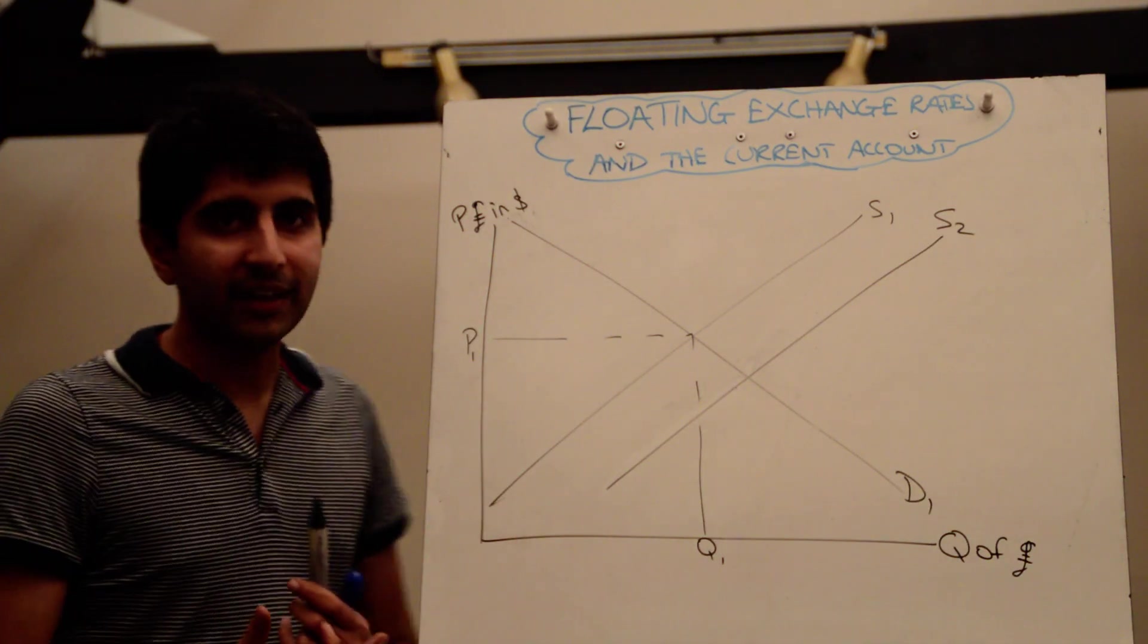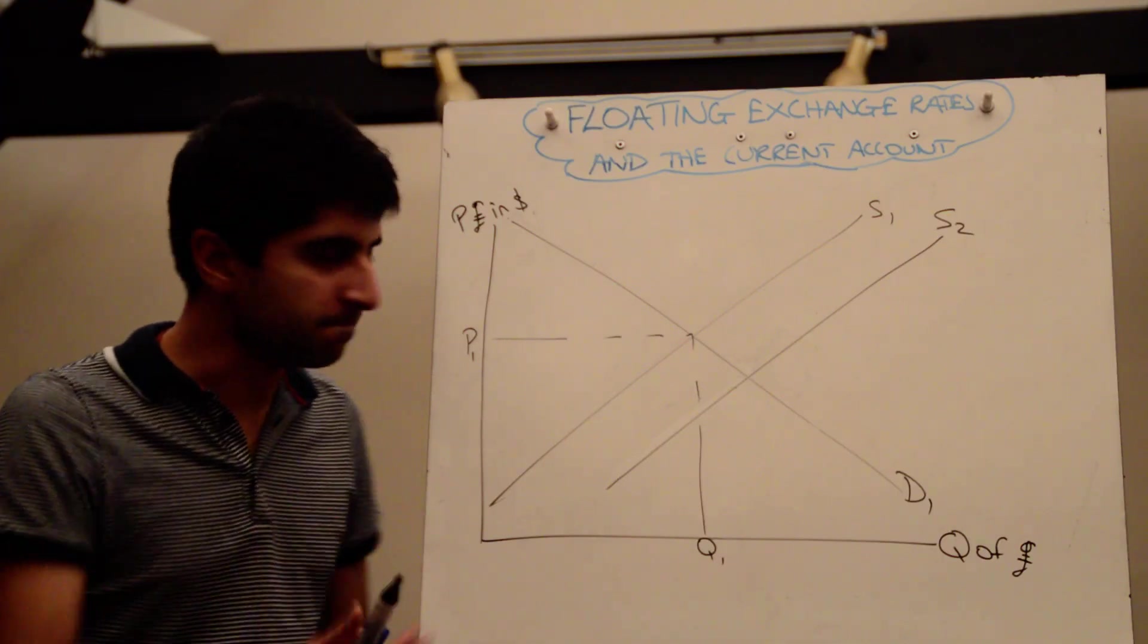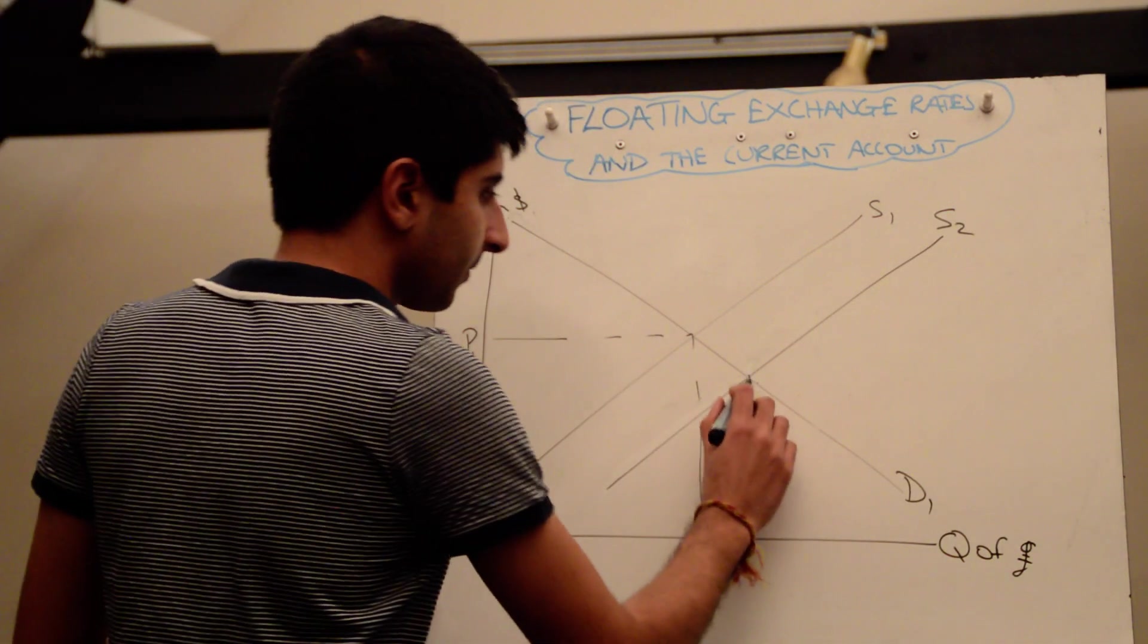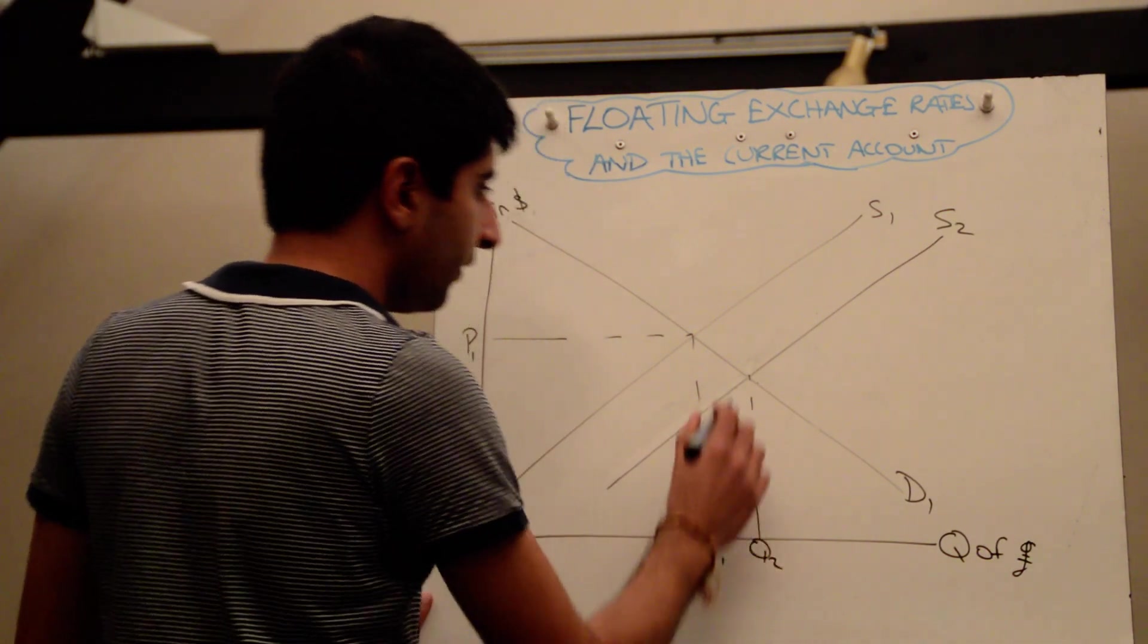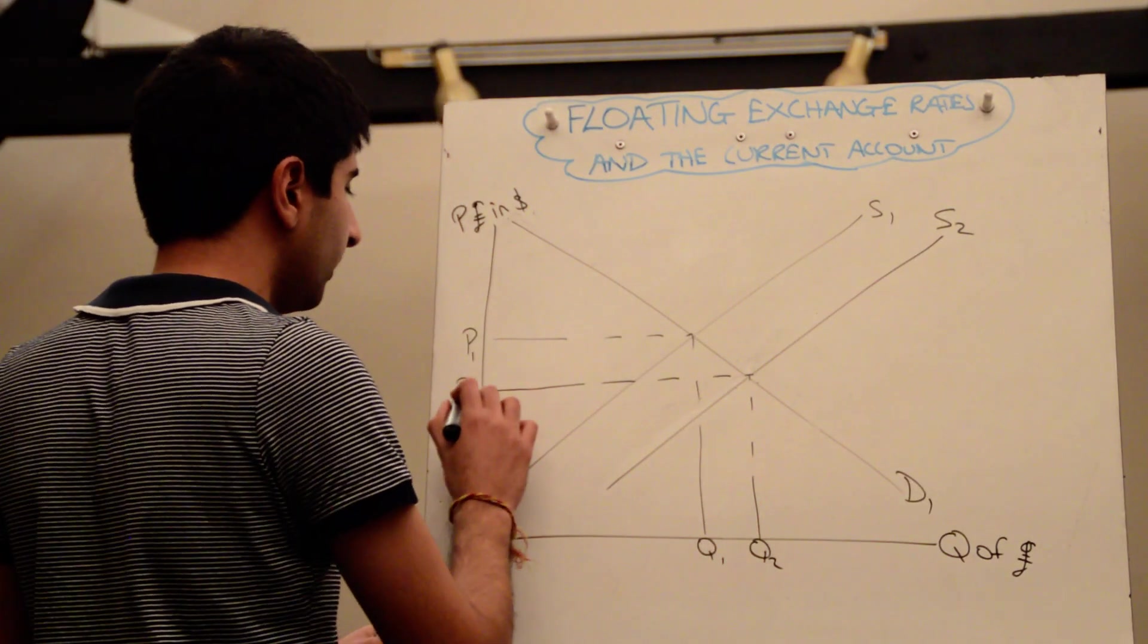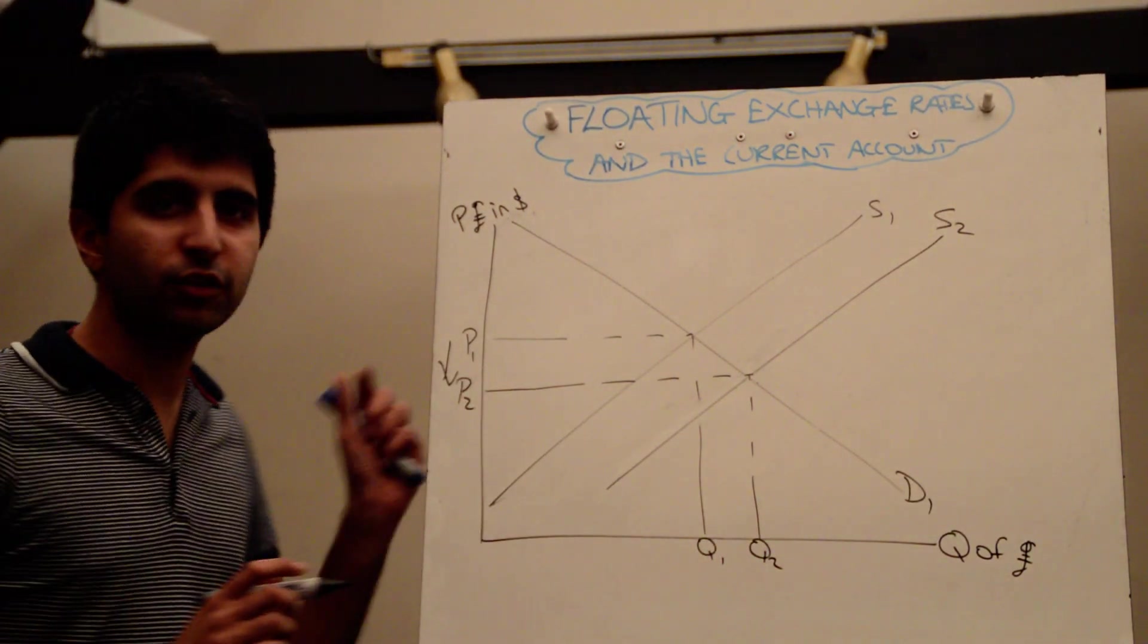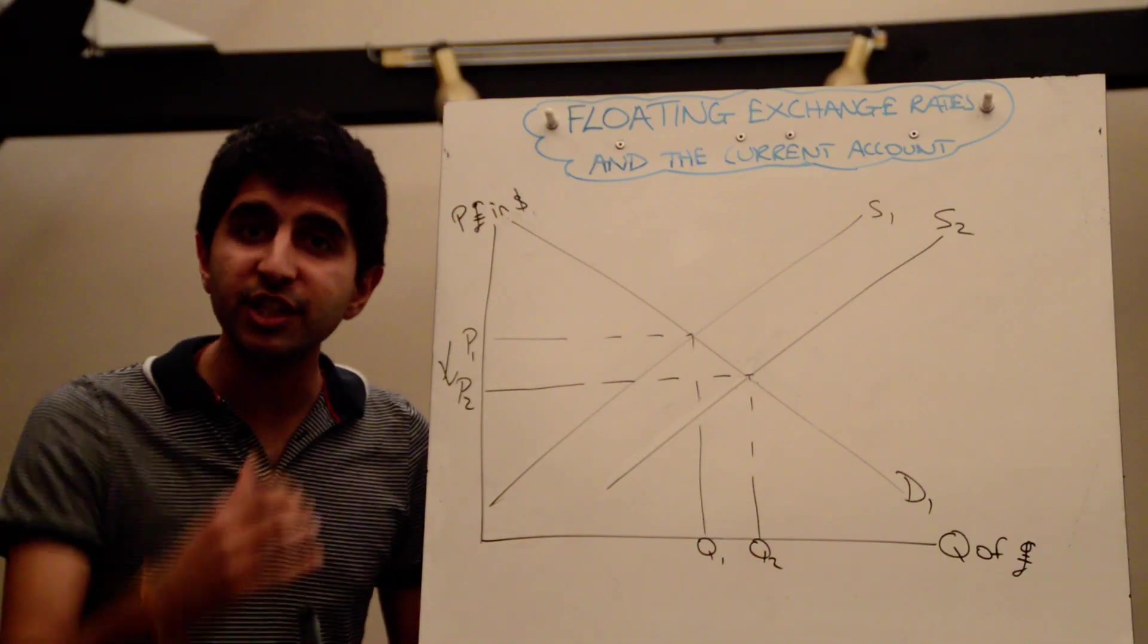So the overall effect is that the supply of the pound is increasing and that increases the quantity of the pound in the market but more importantly it reduces the exchange rate of the pound, it depreciates the pound.